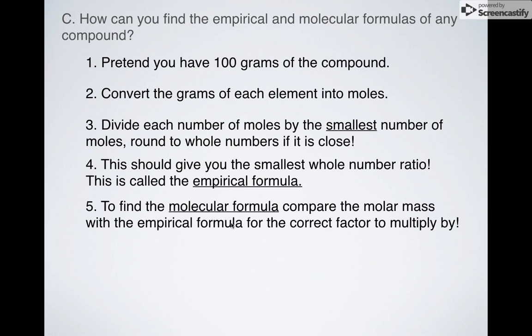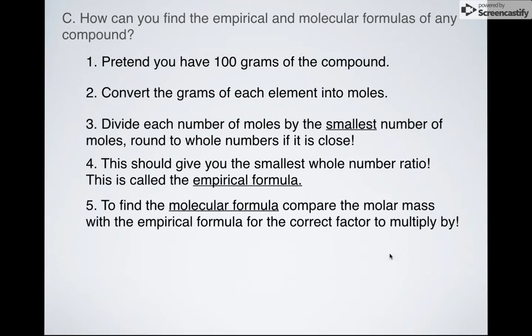That should give you the smallest whole number ratio. We call that the empirical formula. If it asks you for the molecular formula, all you do is you look at your empirical formula, you compare it to your molar mass, and then if you need to, you multiply by the appropriate number. Now, I know that sounded confusing, but we're going to do two examples, and when we do the two examples, I think it'll be a little bit easier to follow.